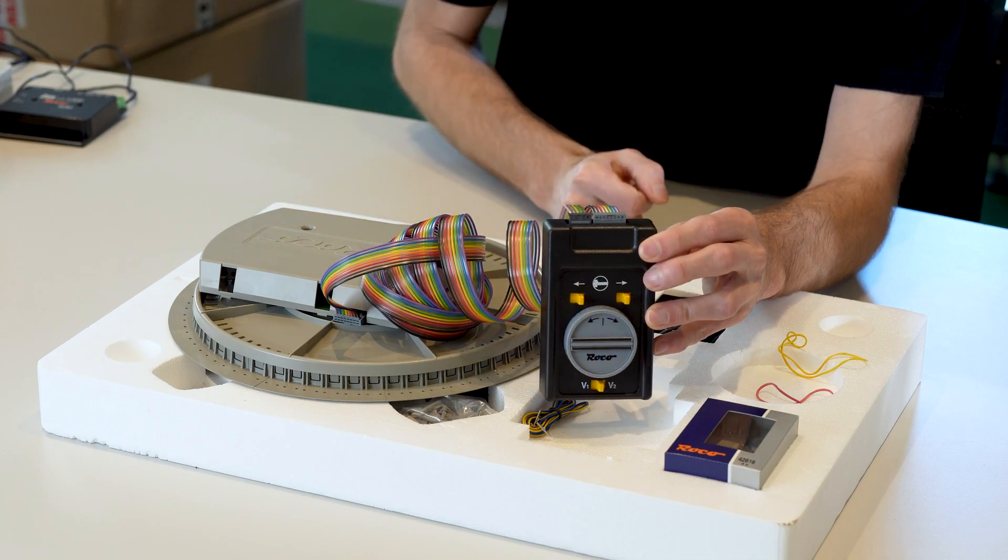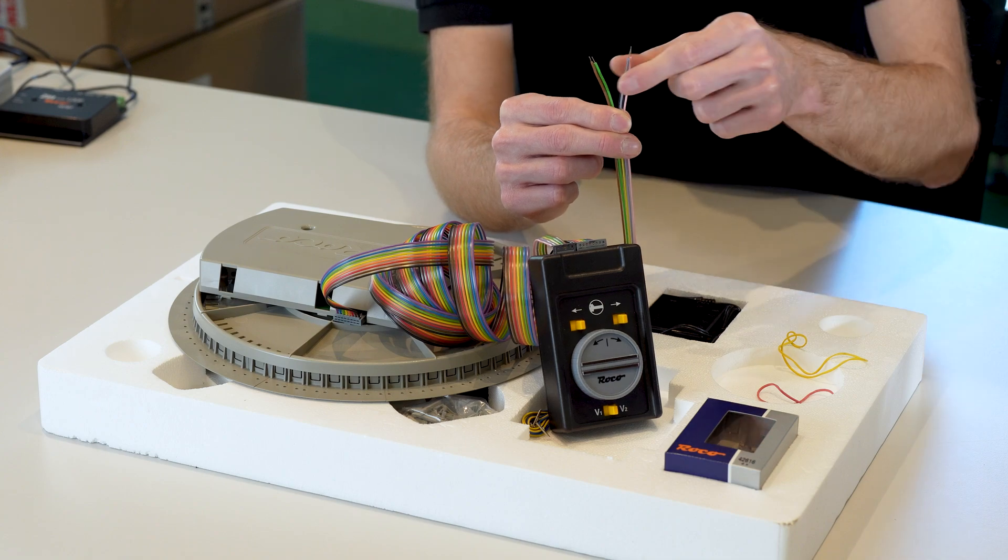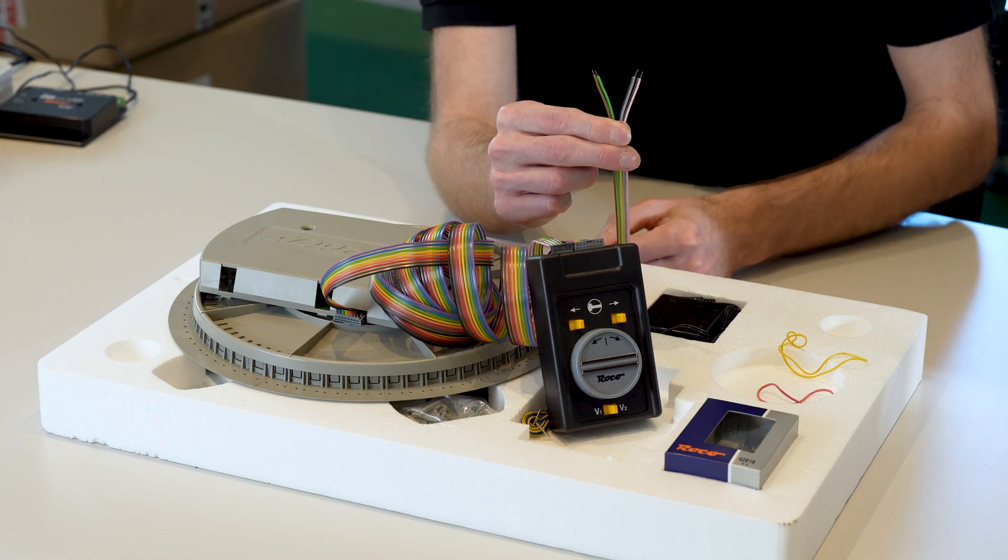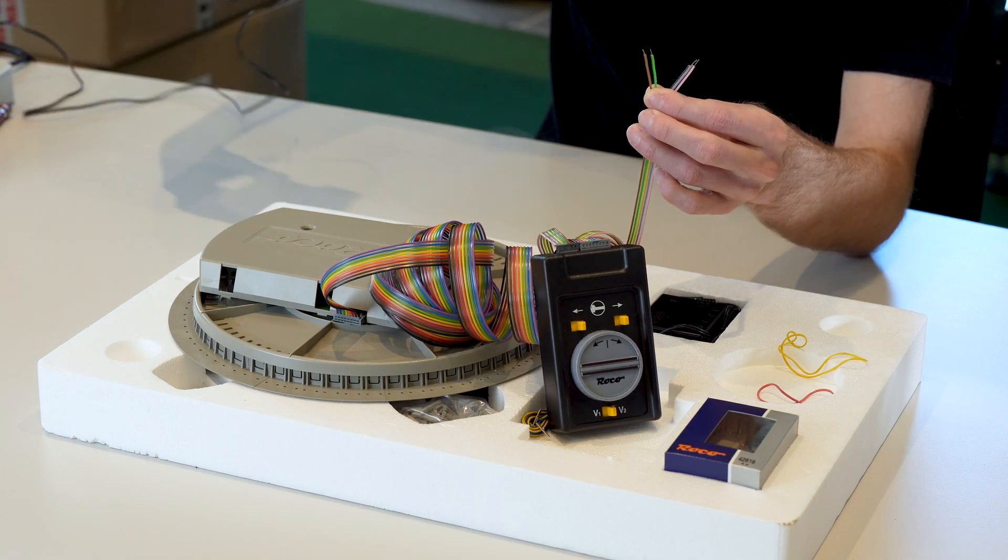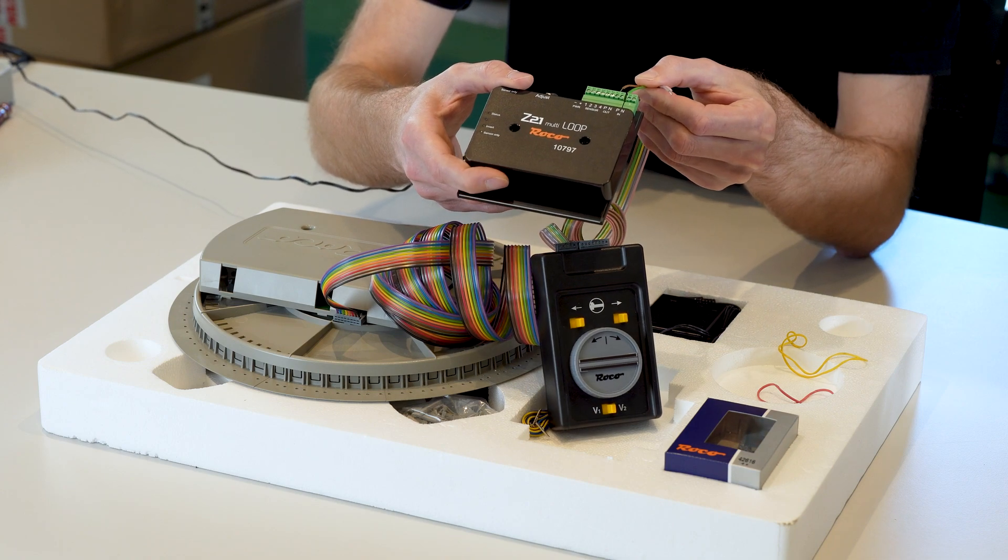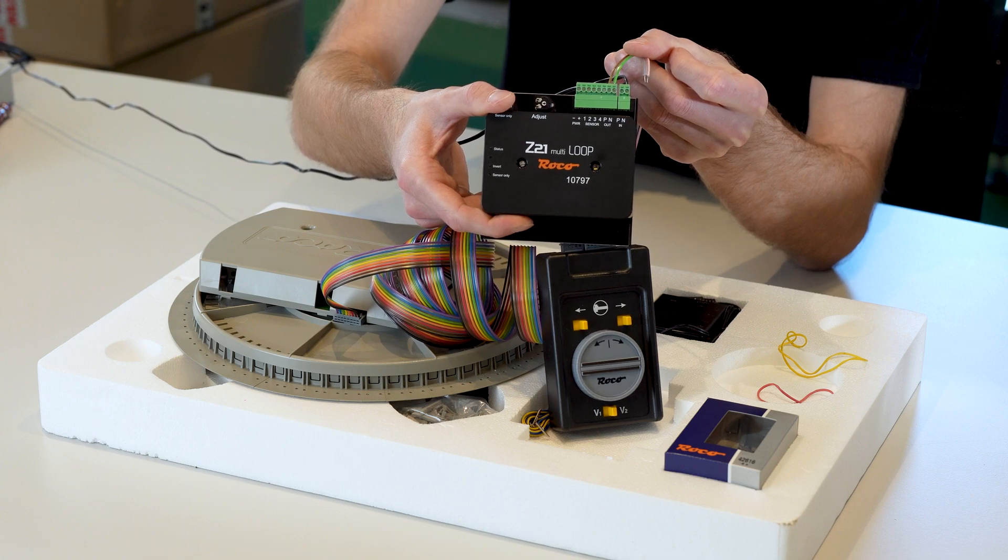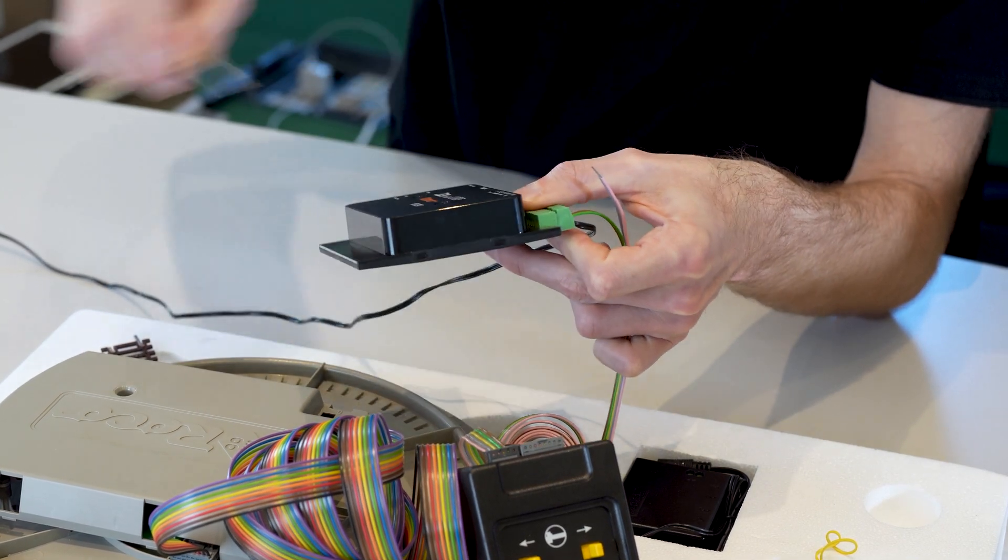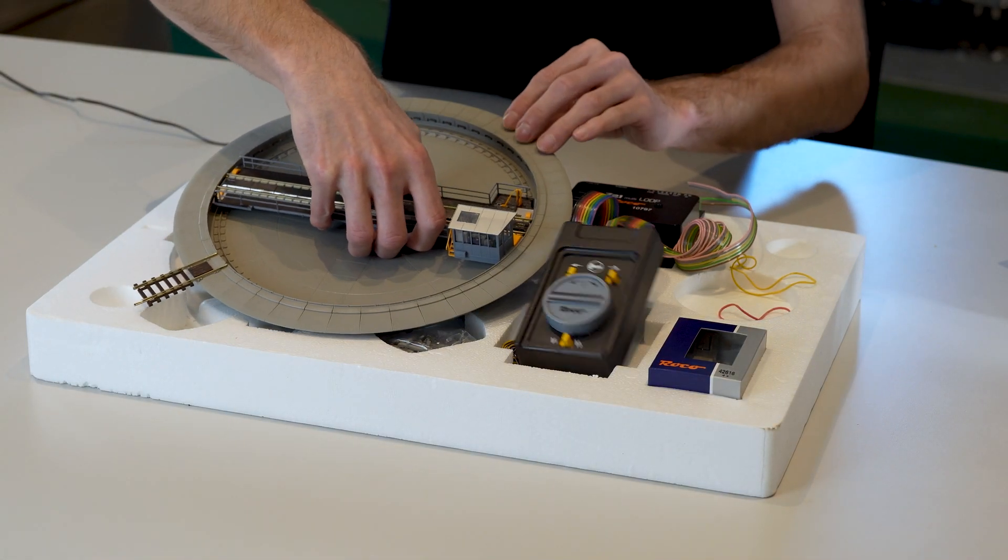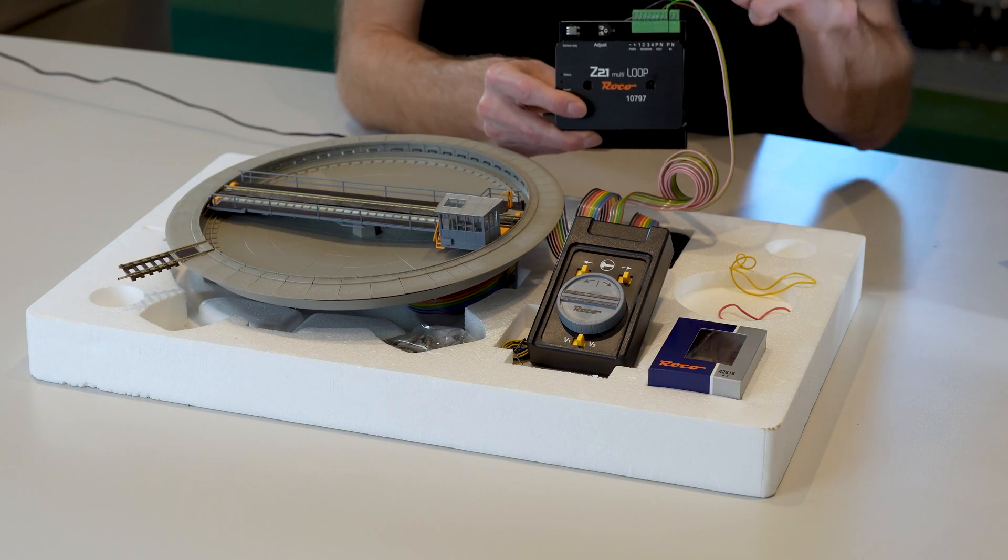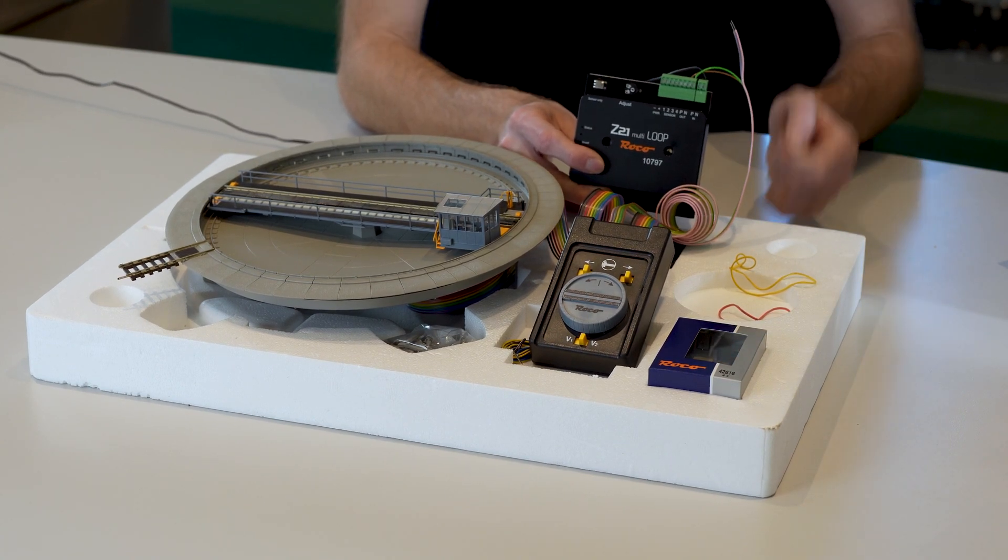The two cables are connected to the accessory transformer for the turntable motor and the green and brown cables are connected to the reverse loop module at the two outputs. When the turntable is installed, the reverse loop module controls the polarity reversal for the platform voltage. The accessory transformer controls the control unit for the turntable, so it can then control the turntable motor to rotate the platform.